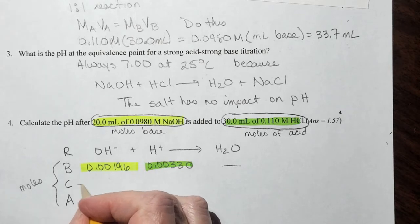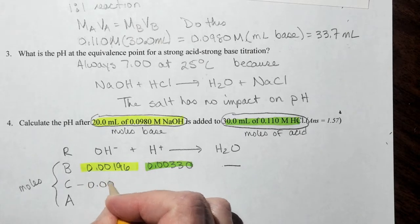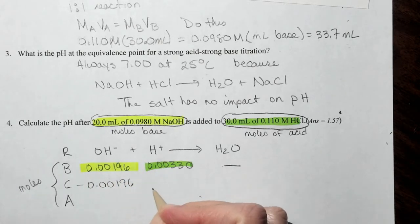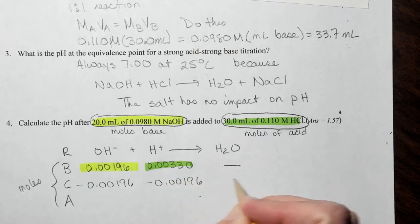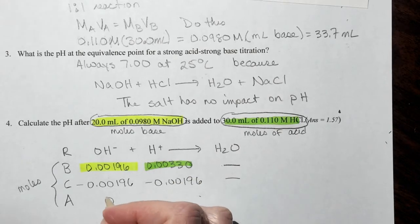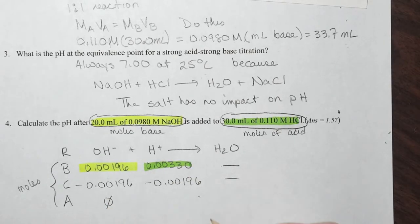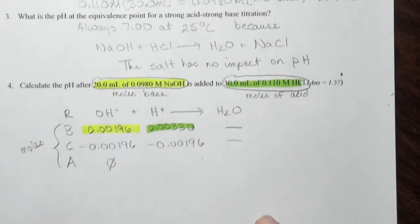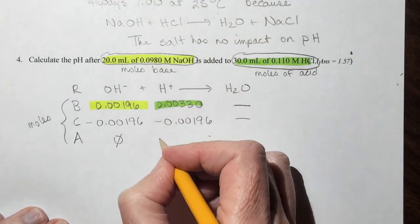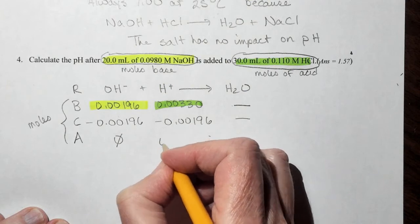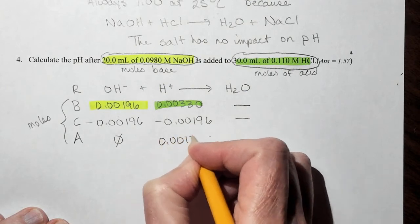So we're going to have minus 0.00196 and minus 0.00196. We don't care about the water. Our final concentration of the hydroxide is 0. The final concentration of the hydronium ion is 0.00134.